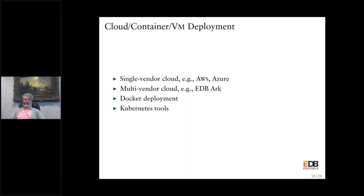Cloud deployments — again, there are a lot of options. Postgres is available on AWS and Azure. There are multi-cloud, multi-vendor options. EDB Arc is a great tool for deploying Postgres in the cloud, including multi-cloud architectures, and it integrates with all the EnterpriseDB tooling. You can also do Docker deployments and use Kubernetes. Lots and lots of options for such deployments.